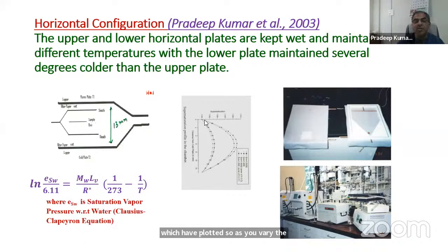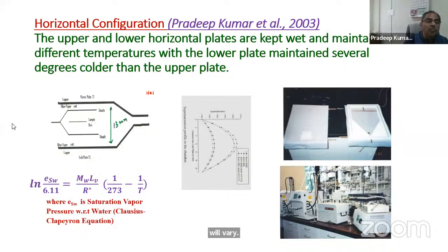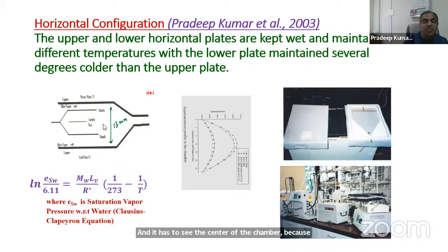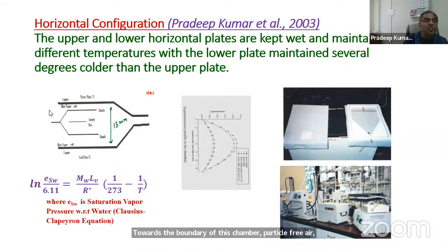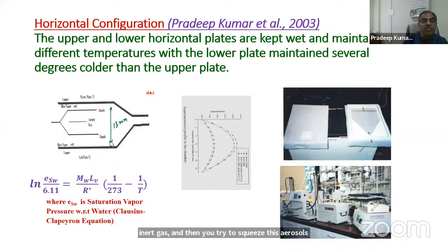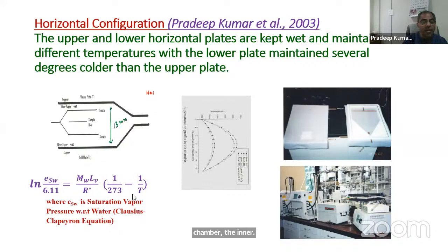As you vary the temperatures, the shape of the supersaturation curve inside the chamber varies. Aerosols from outside are brought into the center of the chamber because that is where the maximum supersaturation exists, so you squeeze them to the center by flowing particle-free air — or sometimes nitrogen, which is an inert gas — towards the boundary of the chamber. The inner free space is only 13 millimeters, and the saturation inside the chamber can be calculated from the Clausius-Clapeyron equation at different points.